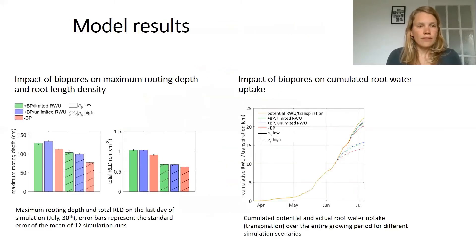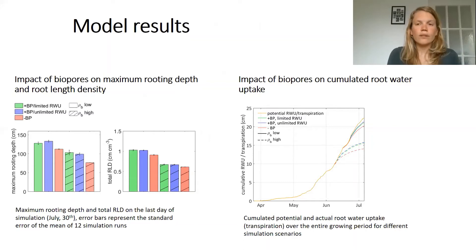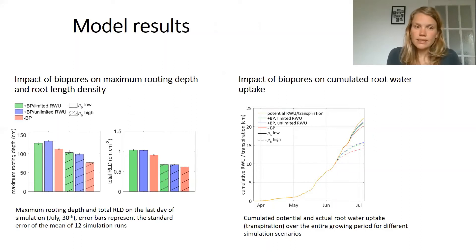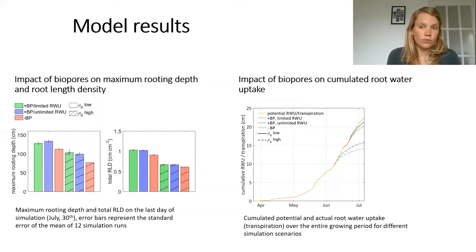In the graph on the left you can see the impact of biopores on maximum rooting depth as well as root length density. Biopores increase both maximum rooting depth as well as root length density. In general both metrics were lower in more compact soil, which is clear because of the increased soil penetration resistance. Limited or unlimited root water uptake did not have any influence on maximum rooting depth or root length density.